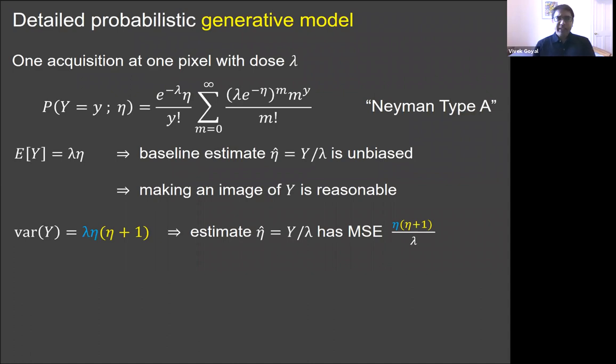But it is easy to show that the expected value of Y is lambda times eta. It's easier to show that if we remember where this random variable came from than if we try to use the PMF directly. But since the expected value of Y is lambda times eta, the simple estimate of Y over lambda is an unbiased estimate for eta. Conventionally, in this form of microscopy, you're just forming an image of how Y varies from pixel to pixel. And this simple one line tells us that that's not unreasonable. In microscopy, the scale is often completely arbitrary. So if you're making an image of Y or you're showing me any kind of scalar multiple of Y, you're making a reasonable estimate.